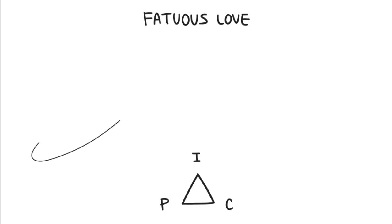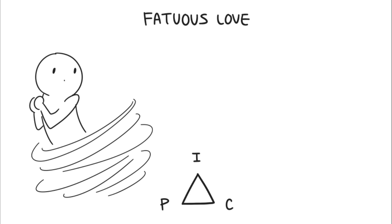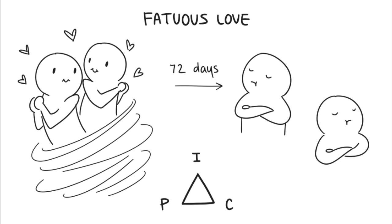Seven: fatuous love. A good example of fatuous love is when Kim Kardashian married Kris Humphries, only to divorce him 72 days later. It's a whirlwind of romance we usually see on television. Fatuous love is the combination of commitment and passion without intimacy.